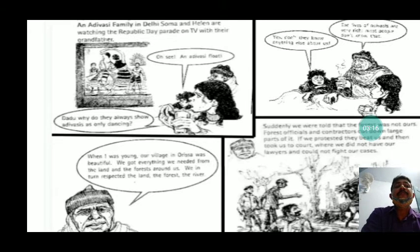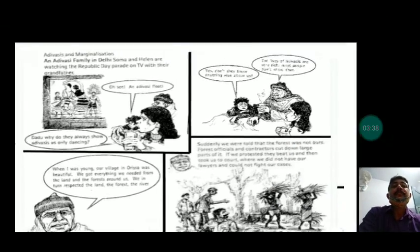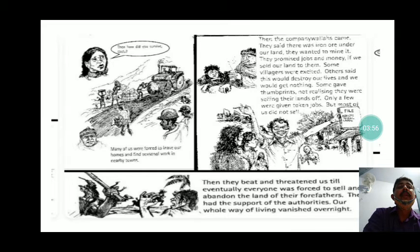Suddenly, forest officials and contractors came and told them they needed to vacate the forest area. They were told they could not go to court or fight the case. The contractors came and destroyed everything in the forest area, started constructing roads, and the family was forced to leave their homes. Companies also came saying iron ore was under their land and they wanted to mine it, which is why the family was asked to leave.